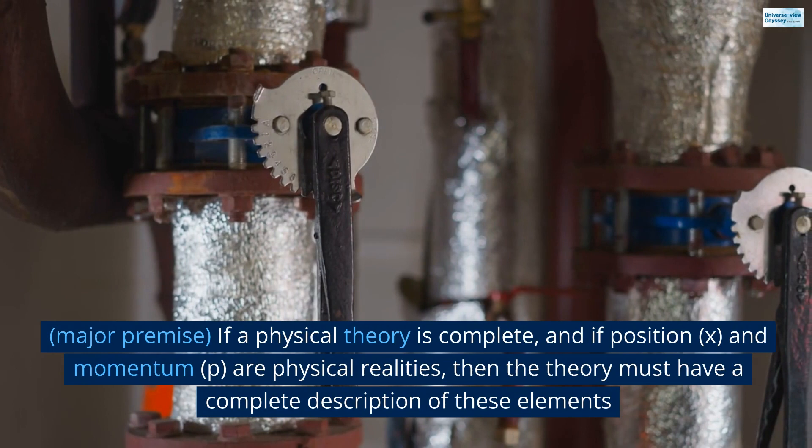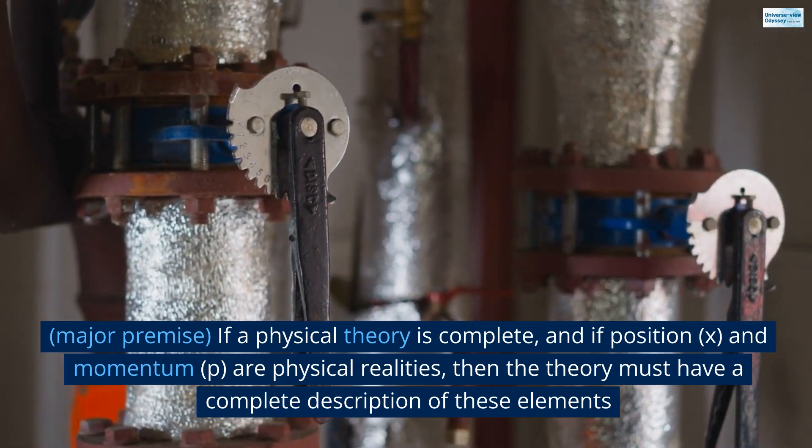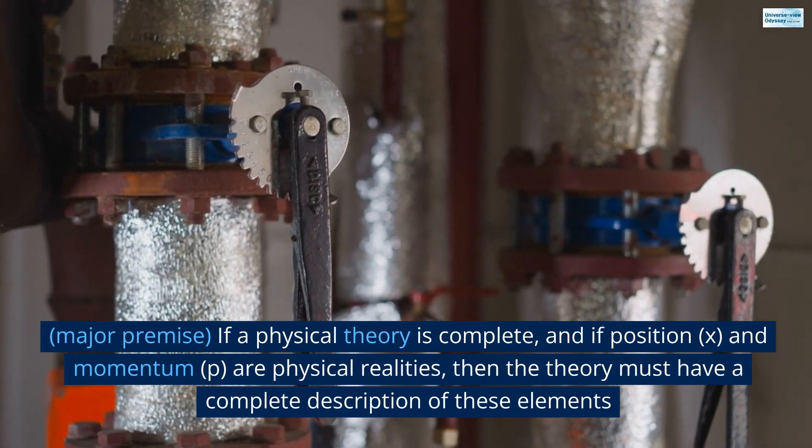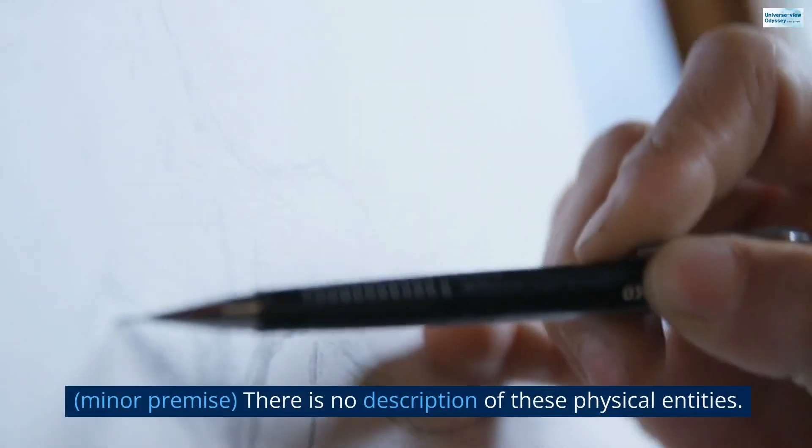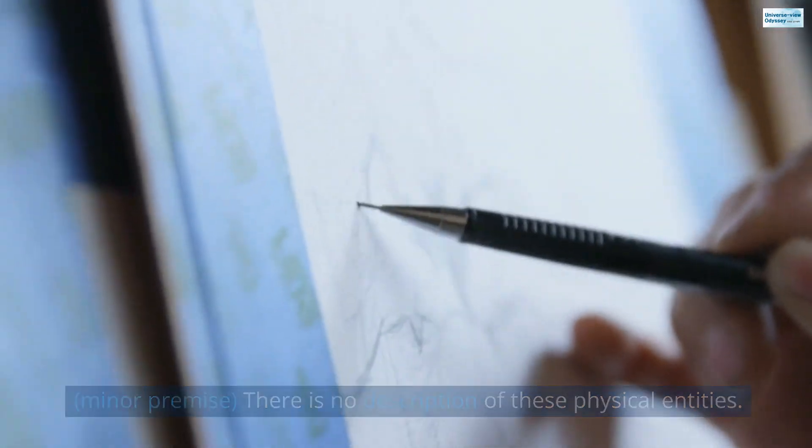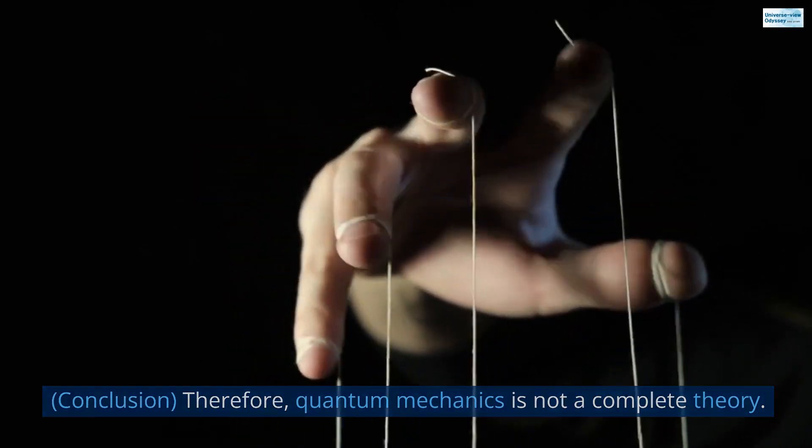Major premise. If a physical theory is complete, and if position, x, and momentum, p, are physical realities, then the theory must have a complete description of these elements. Minor premise. There is no description of these physical entities. Conclusion. Therefore, quantum mechanics is not a complete theory.